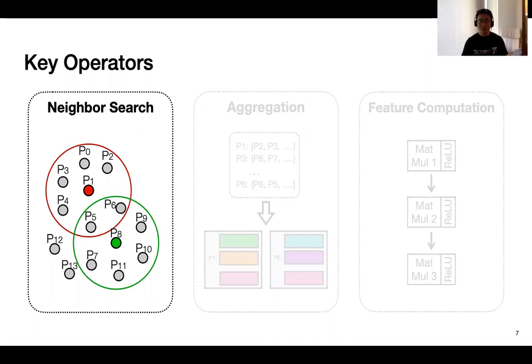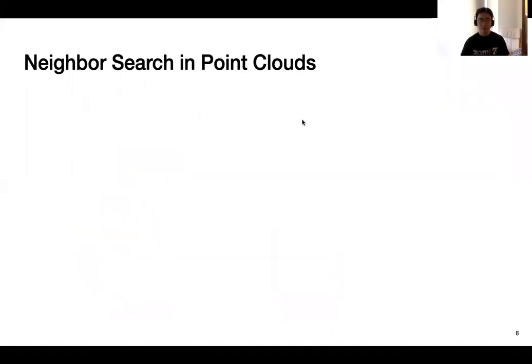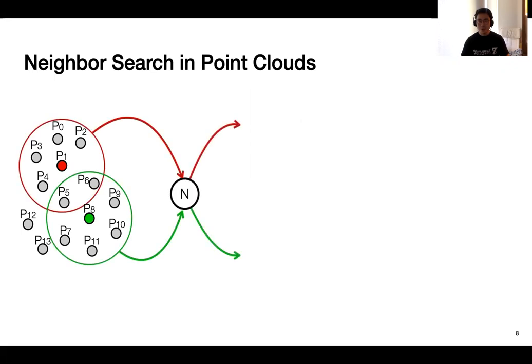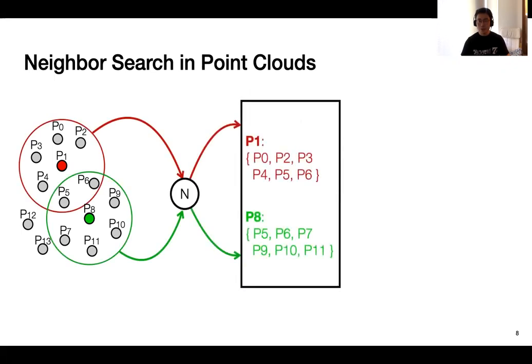The first operator is neighbor search. So what neighbor search does here is to find the neighboring points of some other points. Here's an example. Neighbor search is given a set of points, and then it is instructed to find the neighboring points of P1 and P8 among the other gray points here. Once the neighbors are found, it will return the neighboring information.